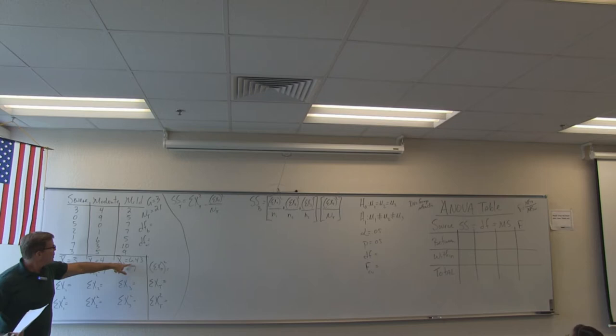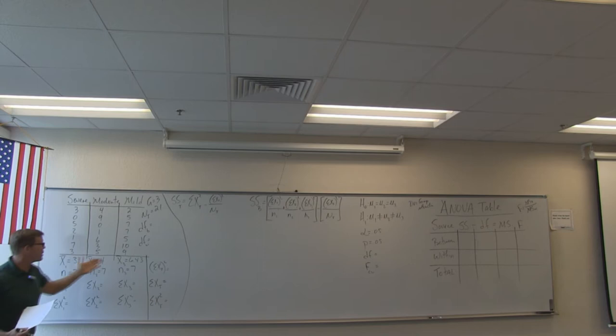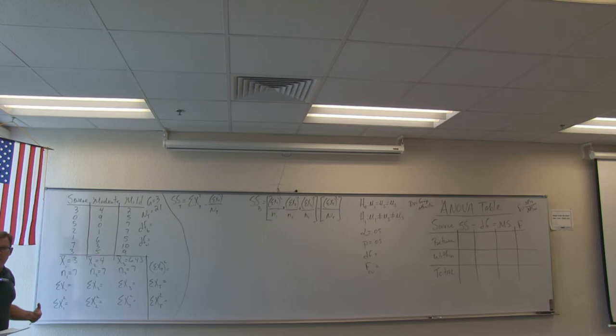Our job is to determine: is the group that receives the mild initiation task significantly more attracted to the group than all the others? Is there a significant difference? What I do know is that it's dependent on where our particular F statistic falls on that F sampling distribution.